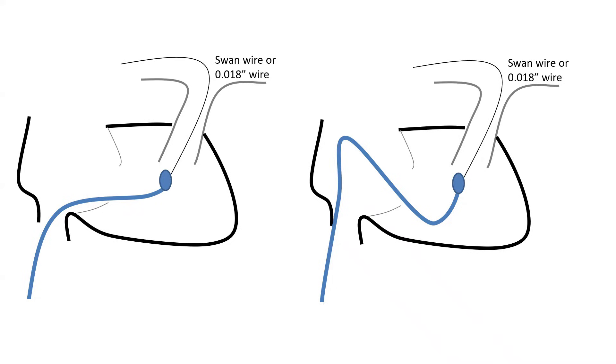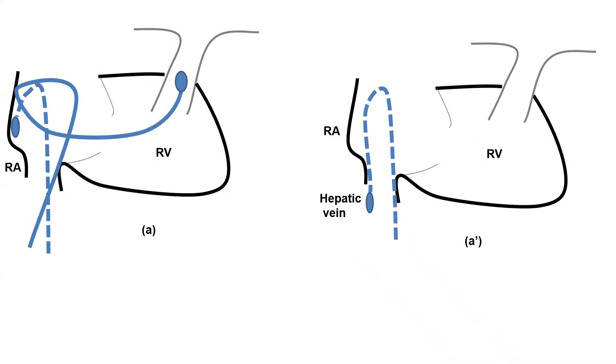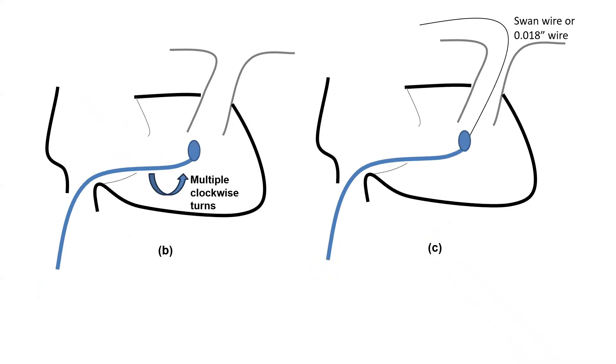So those are the three techniques: hooking the lateral RA or hepatic vein, doing clockwise torques, and especially doing clockwise torque with a wire, which used to be my preferred technique.